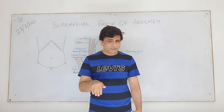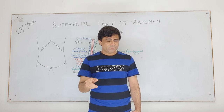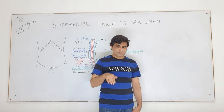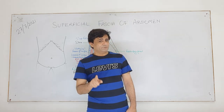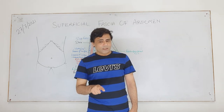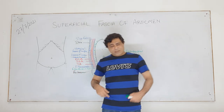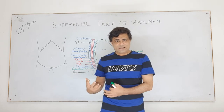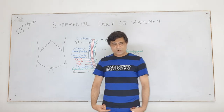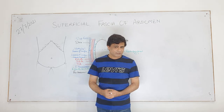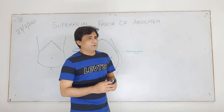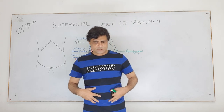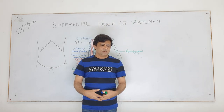Remember the rectus sheath - the anterior wall of the rectus sheath is formed by fascia transversalis; the posterior wall is formed by fascia iliaca. So the deep fascia is actually fascia transversalis, which continues down into the thigh and forms fascia lata. Now I will tell you how this superficial fascia continues into the perineum.